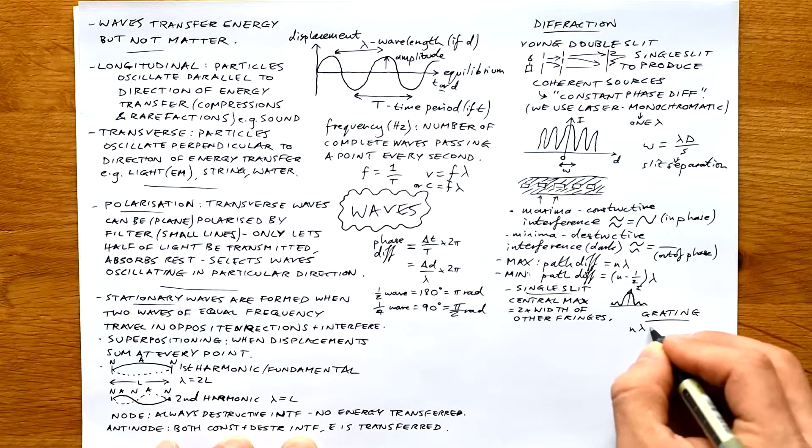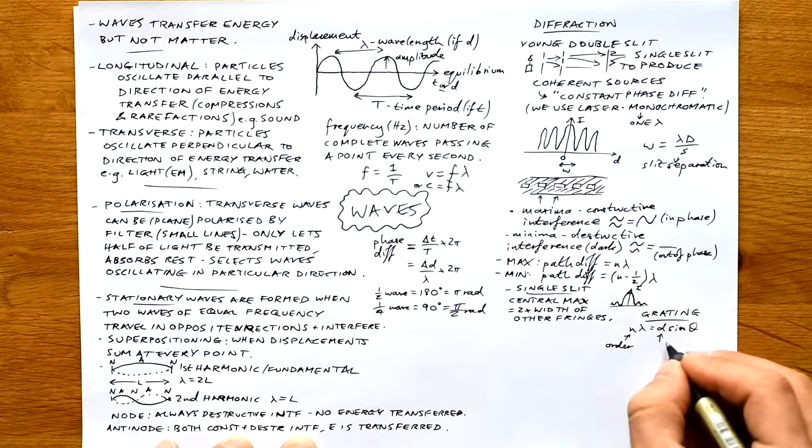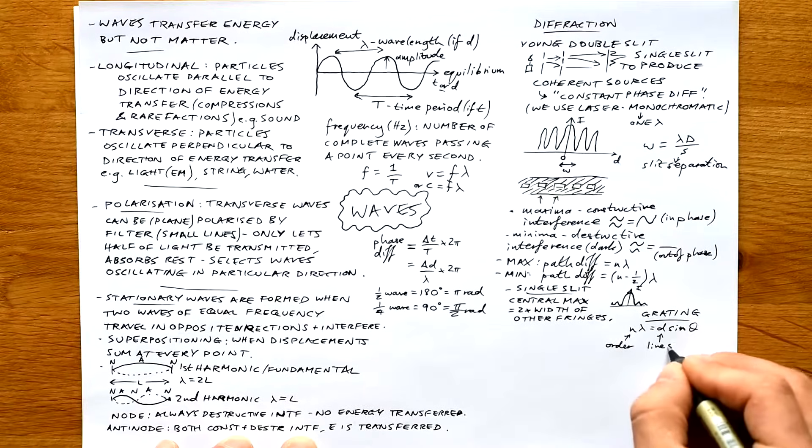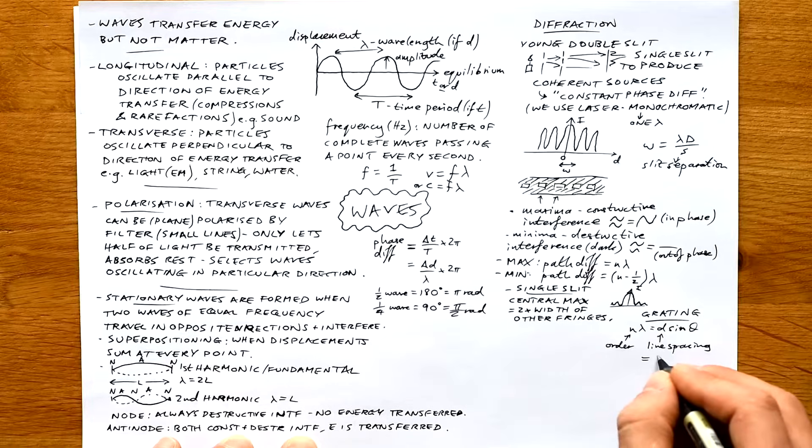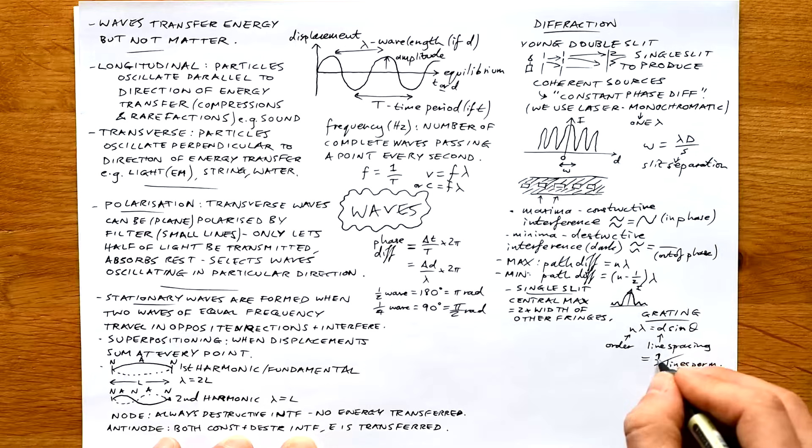The diffraction grating: the equation is n lambda equals d sine theta, where n is the order and d is the line spacing. We calculate that by doing one divided by lines per meter. So you might get lines per millimeter - change it into lines per meter and then do one divided by that to get d.